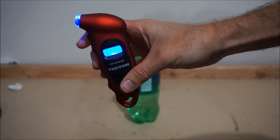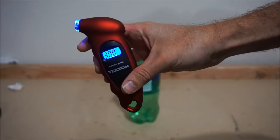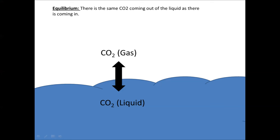30 psi. Equilibrium, in terms of our soda bottle experiment, just means that there's the same amount of CO2 in the gas dissolving into the liquid as there is CO2 in the liquid going into the gas.